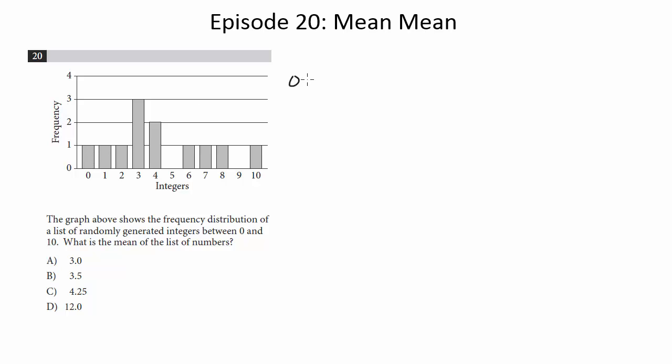So it's going to be 0 plus 1 plus 2, because we've got one of each, plus three 3s plus two 4s, no 5s, plus 6 plus 7 plus 8 and then plus 10.